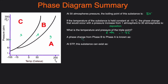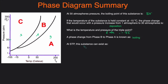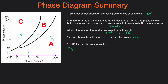Next: the phase change from B to A is known as? Going from B (liquid) to A (gas) is boiling, also called vaporization. Finally, at STP — which is 0 degrees Celsius and 1 ATM — tracing that point lands in region A, which is a gas. So the substance exists as a gas at STP.